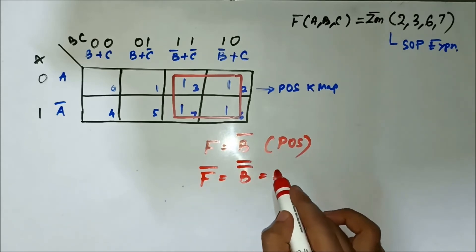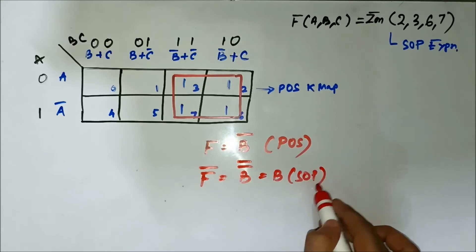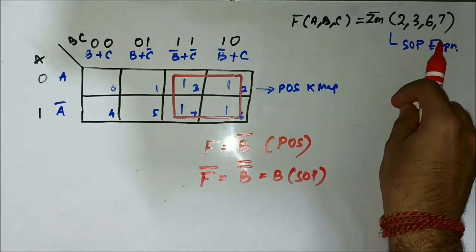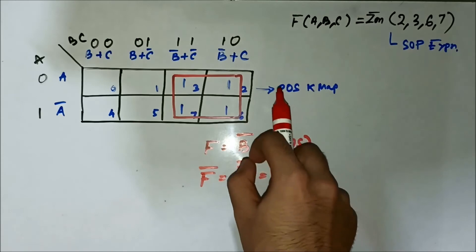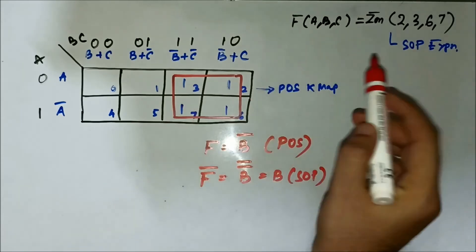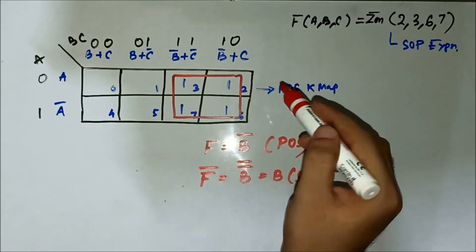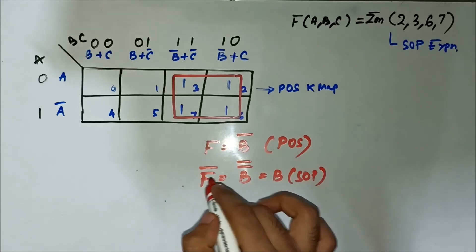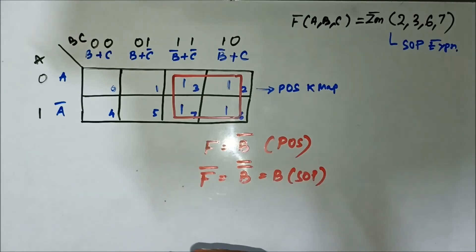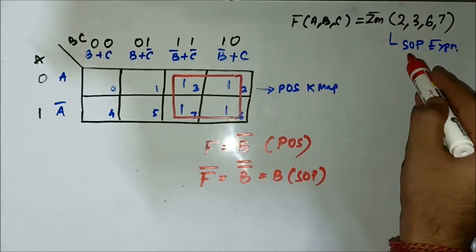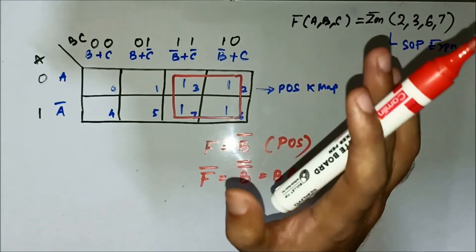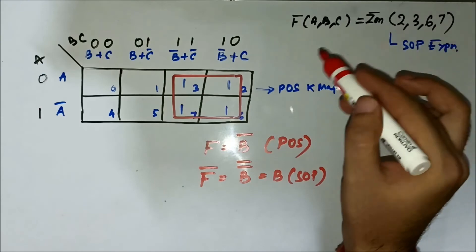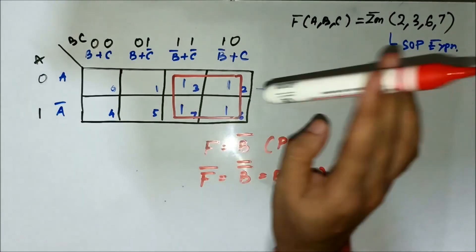Taking the complement gives us the SOP form. In the other questions where we implemented POS expressions using SOP K-maps, we did the same thing — we plotted the zeros, got the expression, then complemented it to get the result. Here, the reverse is happening: we are using an SOP expression with a POS K-map. So this completes the first question.